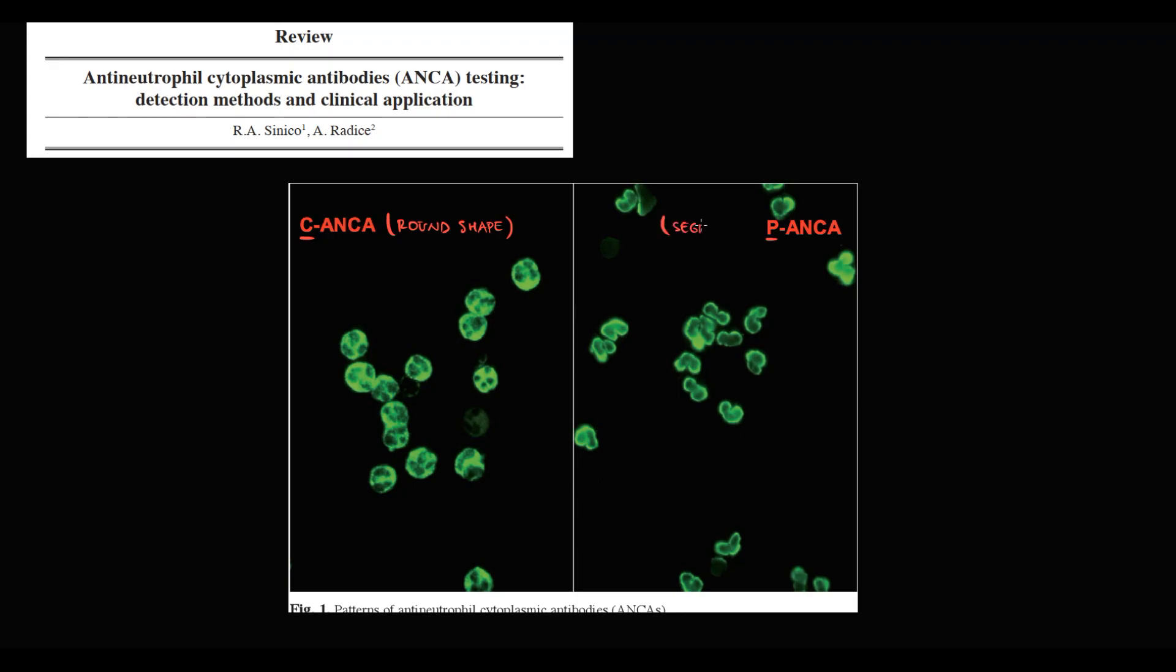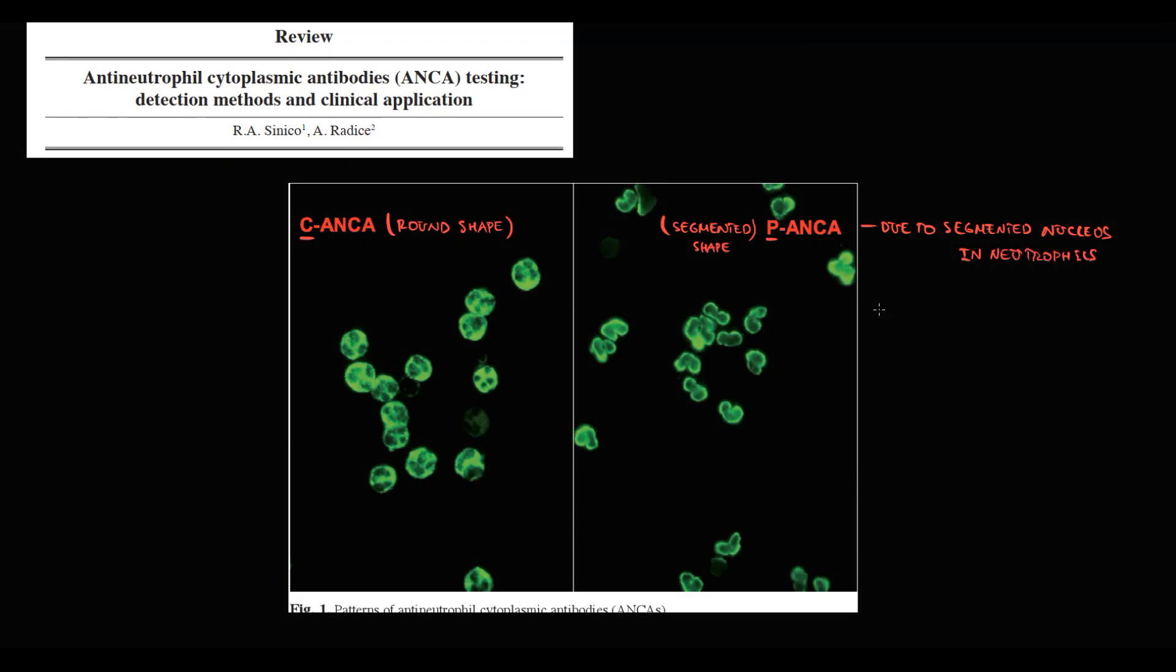In contrast to this, P-ANCA has a segmented shape. Because in case of P-ANCA, autoantibodies bind to myeloperoxidase. And myeloperoxidase is located inside the nucleus. So autoantibodies will be located around the nucleus. We call this perinuclear area. And neutrophils have a segmented shape of nucleus. So under the microscope, the segmented shape tells us about the presence of antibodies in the perinuclear area of neutrophils. And such antibodies we call P-ANCA.